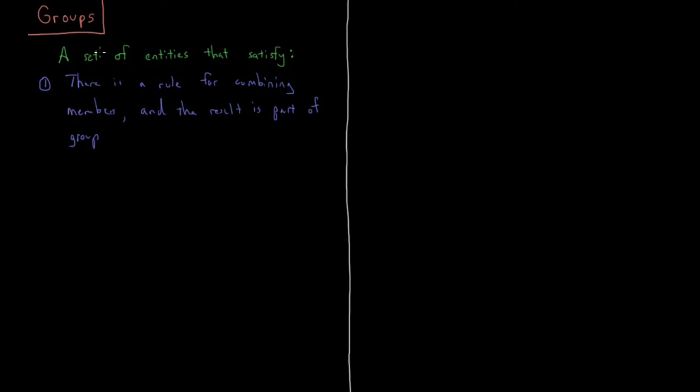So for our purposes, these groups are going to be composed of symmetry operations. So what is that going to mean for us? That's going to be things like, if we have a product of two operators, like operator B acting on a molecule, then operator A acting on a molecule, that product is going to be defined as operator C. And so that means that for all of these cases, for all members of A, B, and C are going to be part of the group.